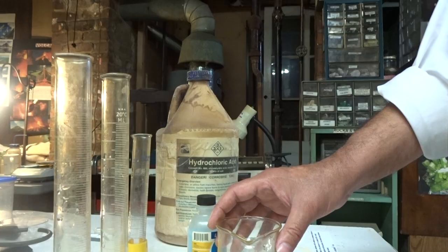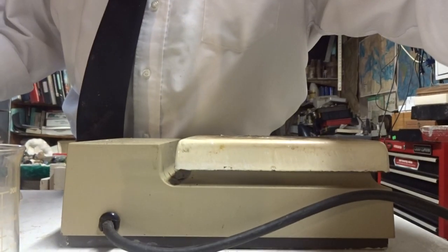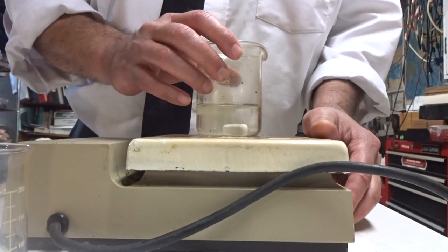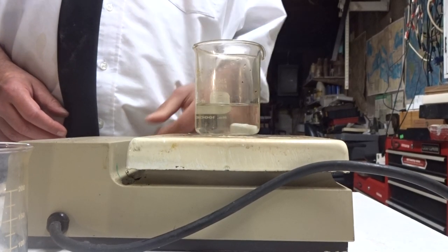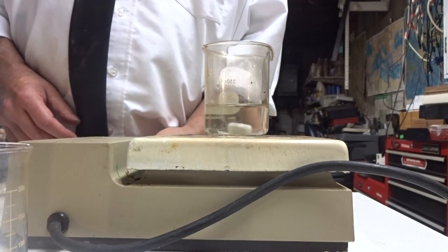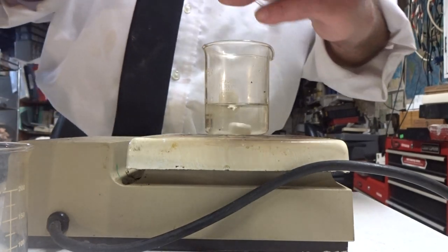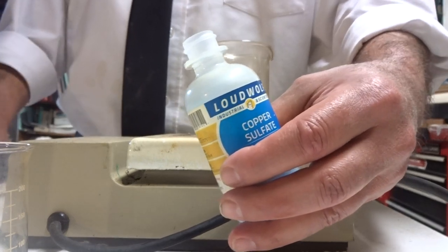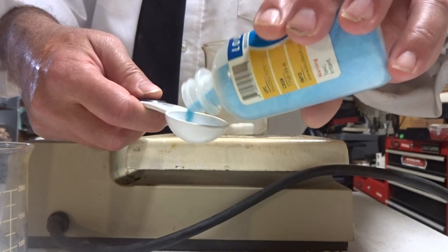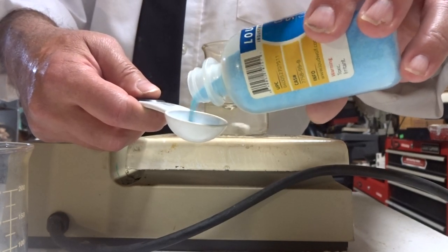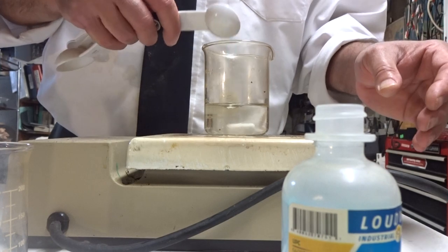Now, I'm going to put this on the hot plate. And turn on the stirrer. No need for heat, just stirring. Then I'm going to take my copper sulfate. And I'm going to add it into a spoon. I don't have to measure it precisely. And put it into the beaker.